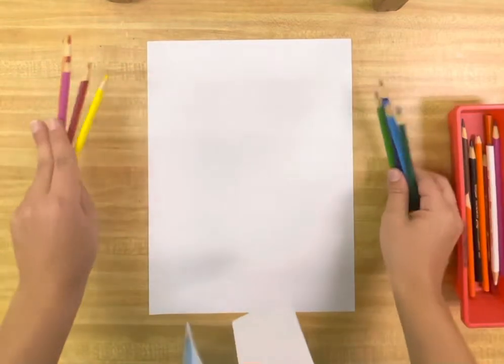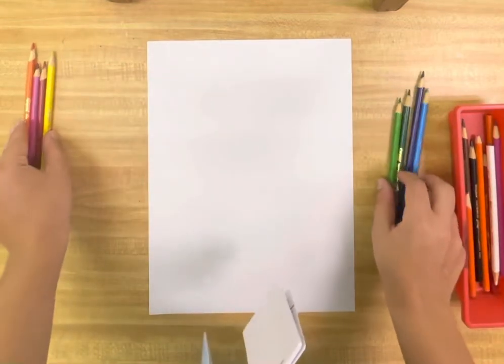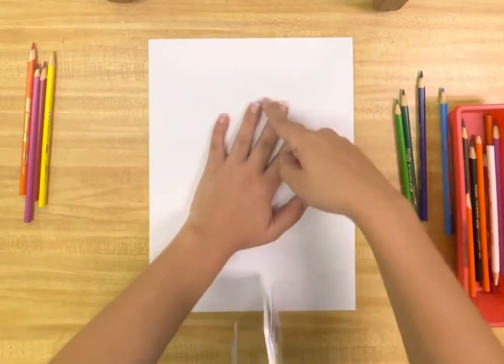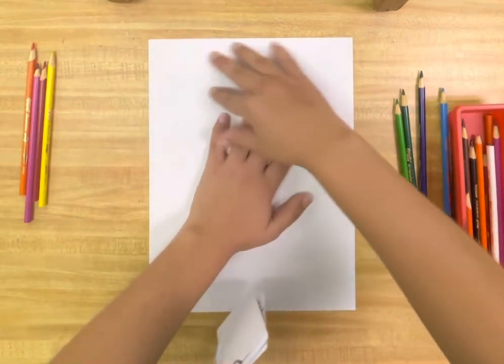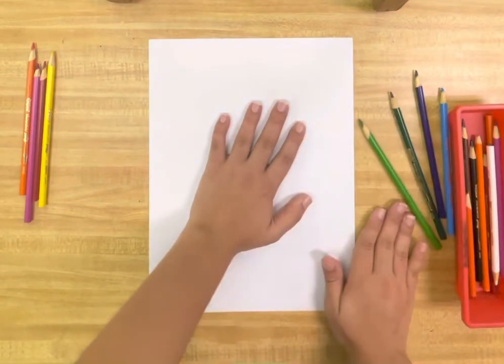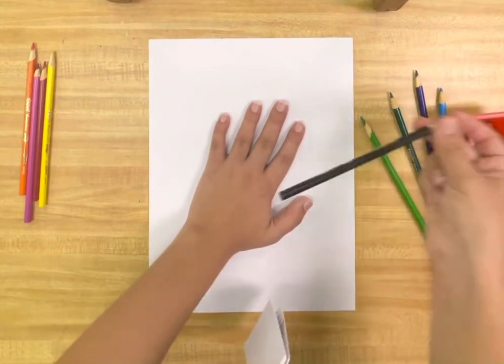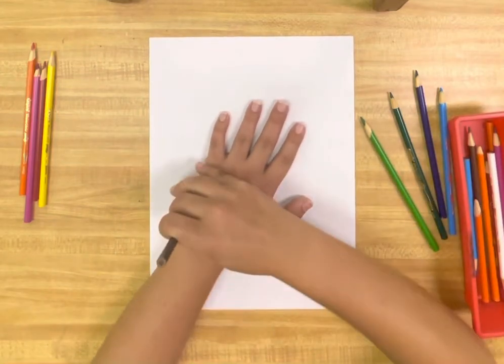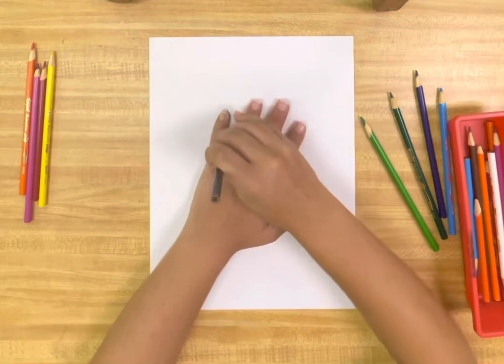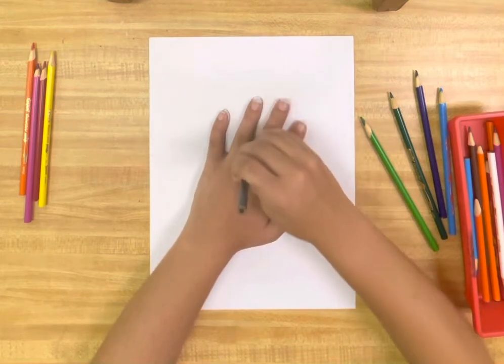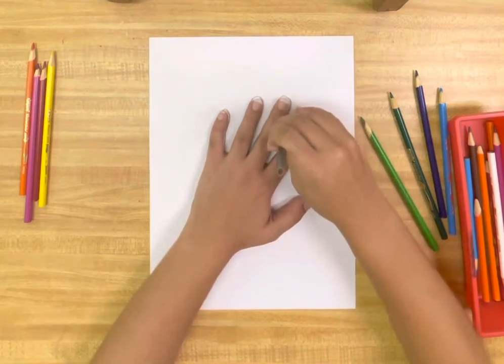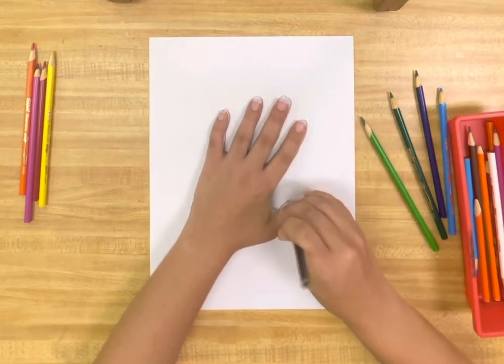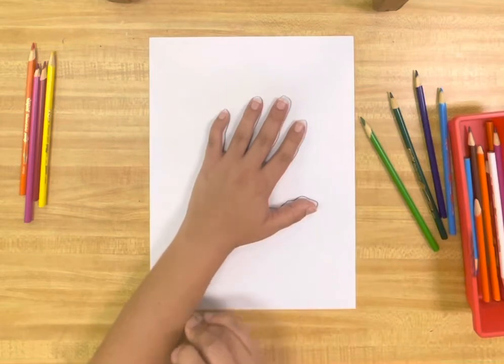What I'm going to be doing today is tracing my hand. Whatever's inside of my hand is going to be a warm color. The background behind my hand, I'm going to use cool colors. So what I'm going to do is use a pencil to trace my hand first. Just make sure that you have your pencil straight upright and that you hug your fingers when you trace around your arm.